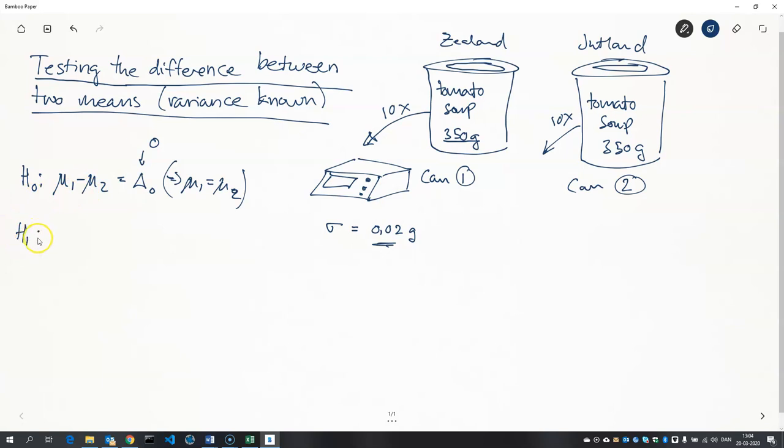My alternative hypothesis I will choose to be a two-tailed test, so I'll just state the fact that they're not the same. So this is the same as saying the difference is not zero—that's the same as saying that they're not the same.